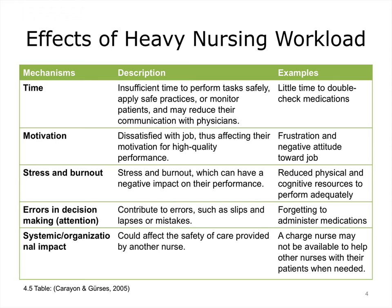Workload is a very important explanatory variable in human factors analysis. Heavy workloads can have a range of consequences as characterized by Carrion and Gurses. They developed a classification scheme which identifies five mechanisms for understanding the effects of a heavy nursing workload. For example, a nurse may have insufficient time to perform tasks safely, apply safe practices, or monitor patients, and this may even reduce their communication with physicians. Stress reduces the physical and cognitive resources to perform adequately. Errors in decision-making, such as a mistake in medication administration, can certainly be affected by workload issues.